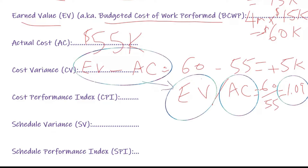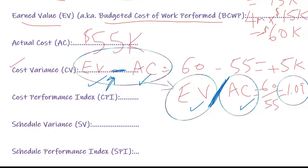Here's the key similarity to remember between cost variance and cost performance index: cost variance is a difference, so you subtract; cost performance index is a ratio, so you divide. Both use the same items — earned value and actual cost. The rule is: every time you hear 'variance,' subtract; every time you hear 'index,' divide.